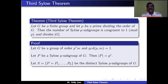Let S be the set of all distinct Sylow P-subgroups of G. Let these Sylow P-subgroups be P = P1, P2, P3, ..., Pk. That means there are K distinct Sylow P-subgroups.